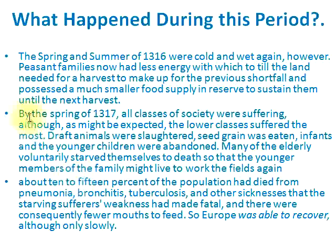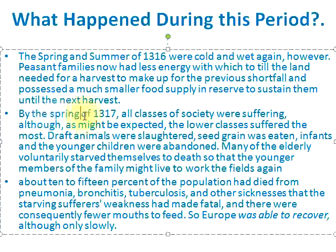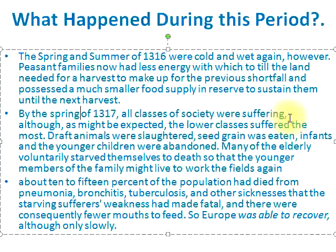By the spring of 1317, all classes of society were suffering, although, as might be expected, the lower class suffered the most. Draft animals were slaughtered. Seed grain was eaten. Infants and younger children were abandoned. Many of the elderly voluntarily starved themselves to death so that the younger members of the family could live to work the fields again.